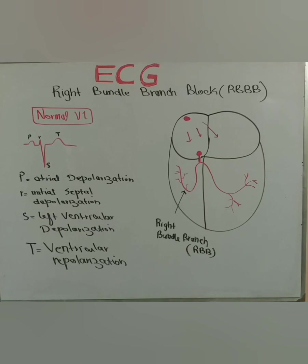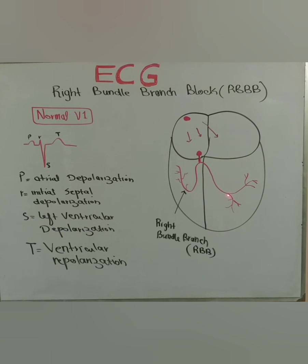Let's talk about the normal morphology of V1 — without right bundle branch block. If you look at lead V1, it is a predominantly negatively deflected chest lead, and there is a reason for it. We see the P wave from atrial depolarization, then a very small R wave which is positively deflected. The reason for this is that there is a small branch which goes towards the septum, and when the impulse is traveling down the conduction system, even before it enters into the right and left bundle branches, it first enters into the septum.